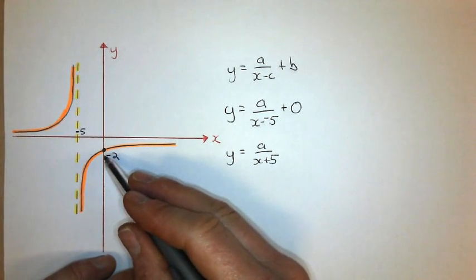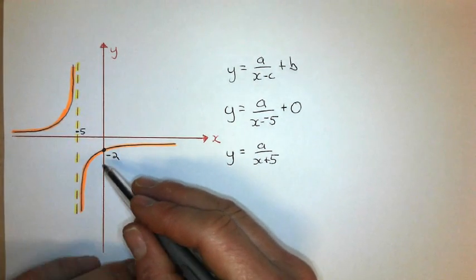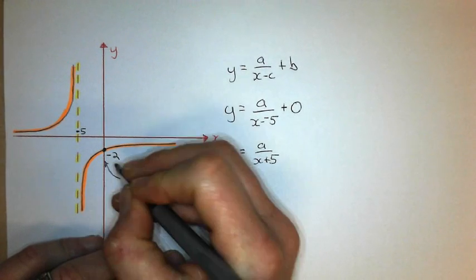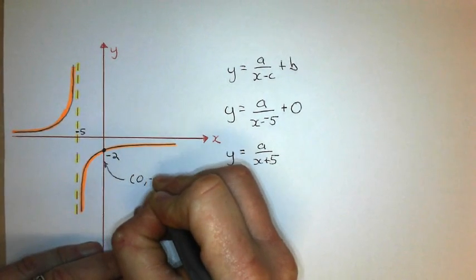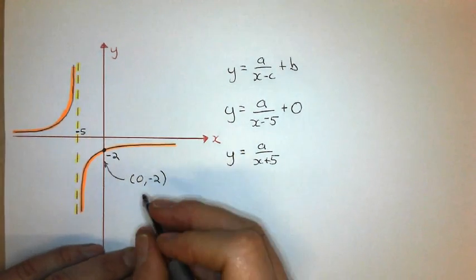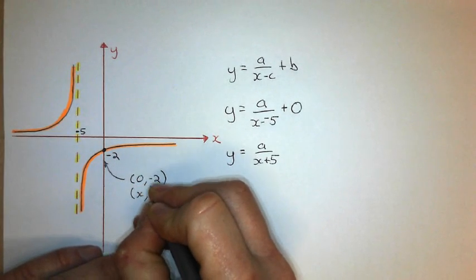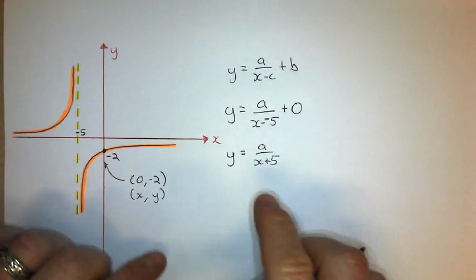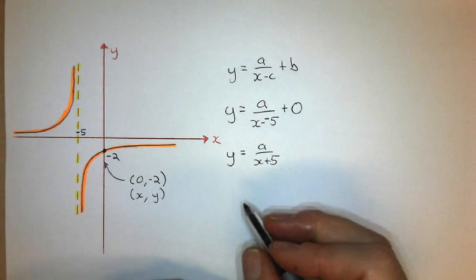Plug in my coordinate. I'm not really given a coordinate here. I'm just given the y-intercept. And that y-intercept there is written as 0, negative 2. So x is 0 and y is negative 2. And we substitute those in there and solve for a.